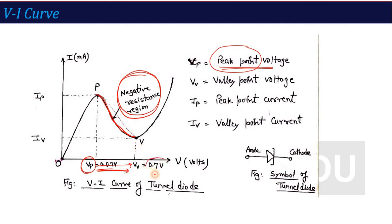Once the voltage reaches 0.7V — which is the normal forward voltage for silicon — this is called the valley point voltage. As you reach the valley point voltage at 0.7V, the current will start increasing again. The high current reached before this is called the peak point current, and the lower current at the valley is called the valley point current.